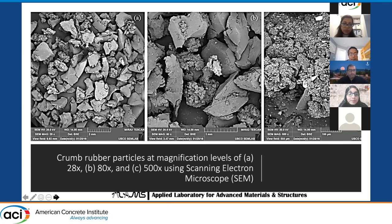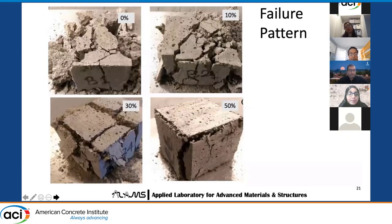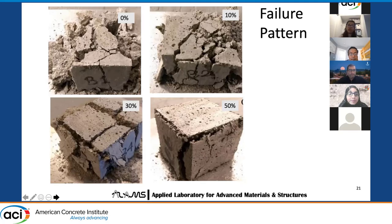Looking at the scanning electron microscopy images at three magnifications, we can see the fragmented and rough surfaces of crumb rubber. The fragmented and rough surfaces cause more water to be trapped around the particles, which decreases the strength and workability. Looking at the failure pattern of mortars with different crumb rubber percentages, the break is gradually becoming more ductile with the increasing amount of crumb rubber. At 50%, the shape is quite completely retained as the failure was ductile, due to the increased damage tolerance of crumb rubber mortars.